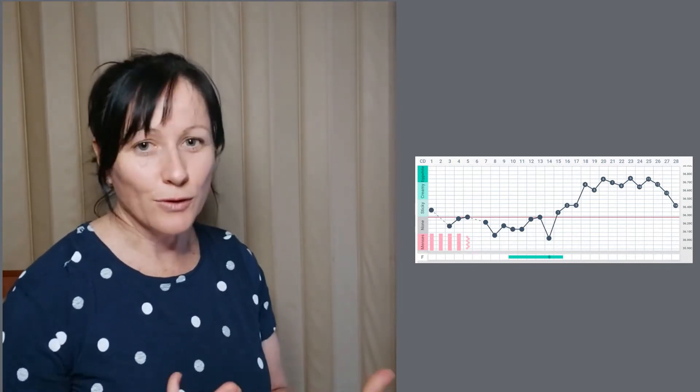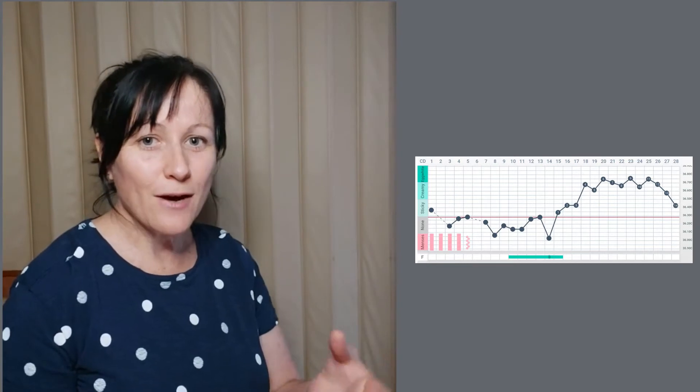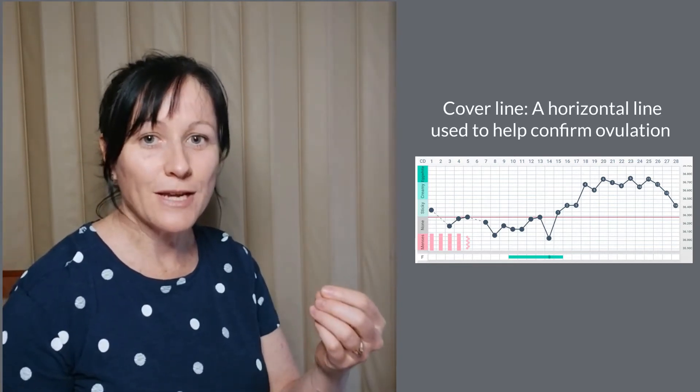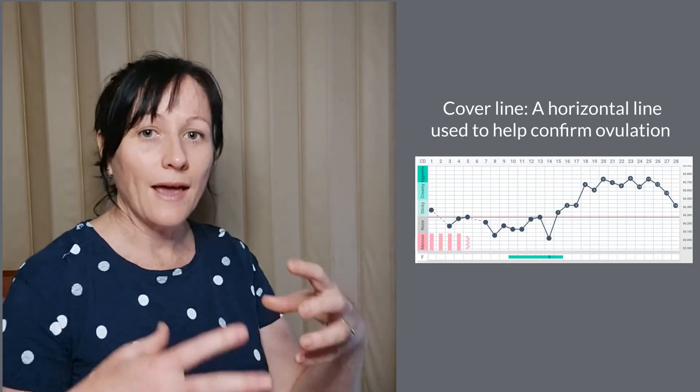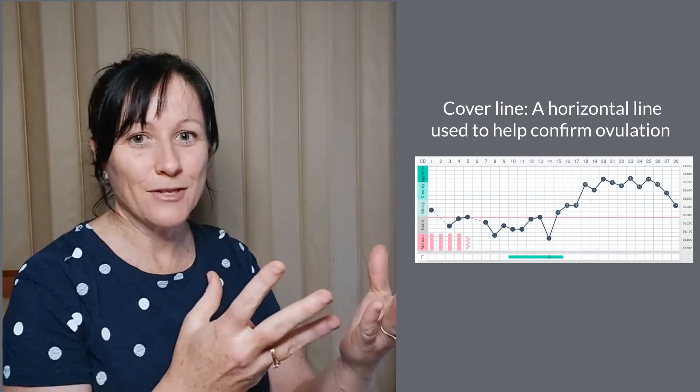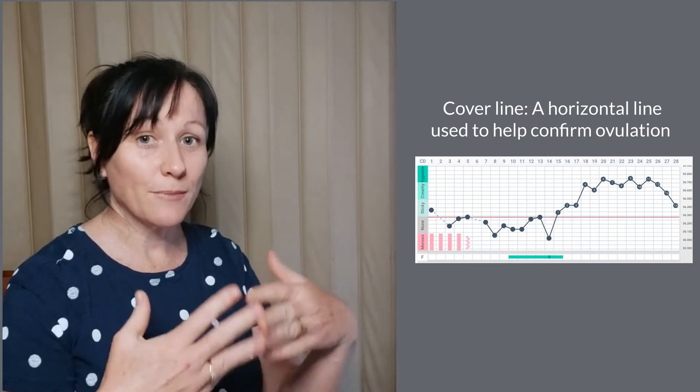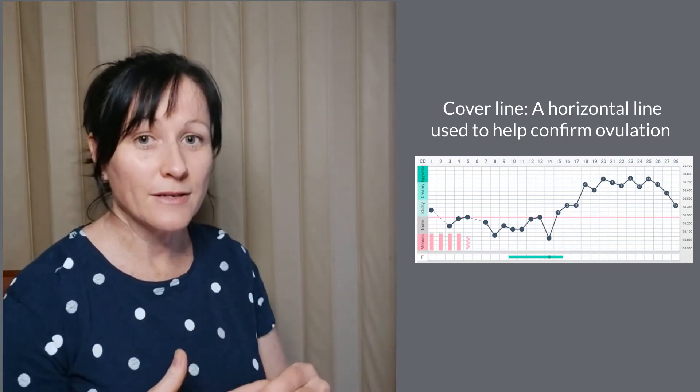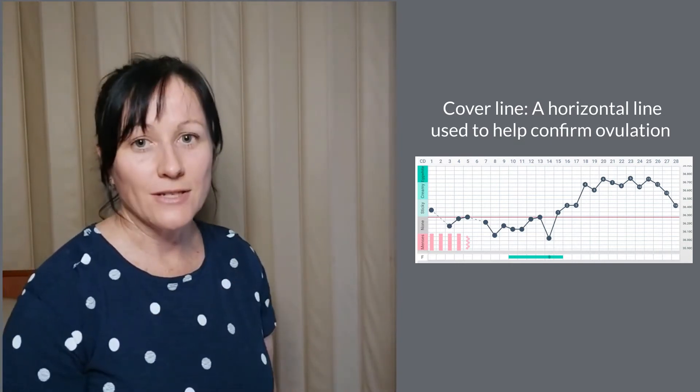Think of this line as a ruler. It's simply a tool to help you more easily visualize your temperature values and then apply a set of calculation rules to those temperatures to see if your temperature shift or your temperature rise validates ovulation has happened.